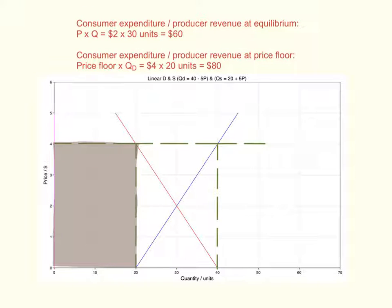This is how the consumer expenditure or producer revenue will change at the price floor. The new consumer expenditure or producer revenue is calculated by multiplying the price floor, which is $4, by the quantity demanded, which is actually what people will buy.